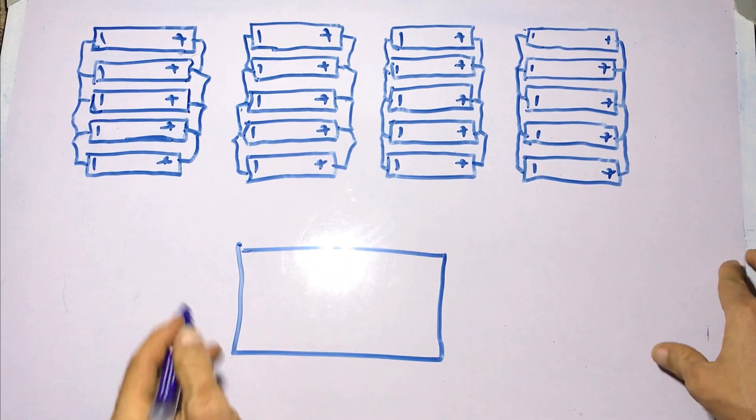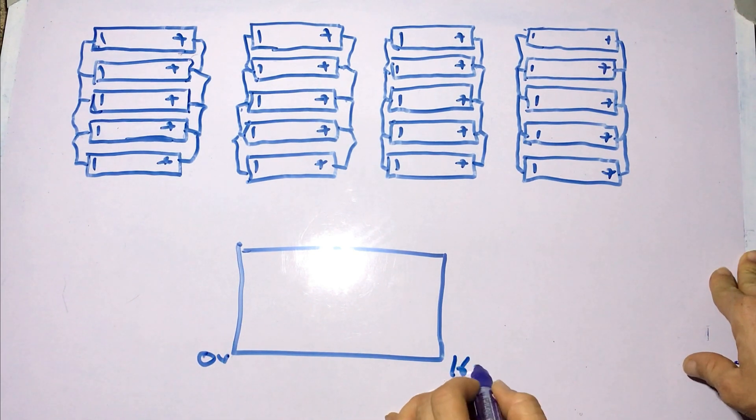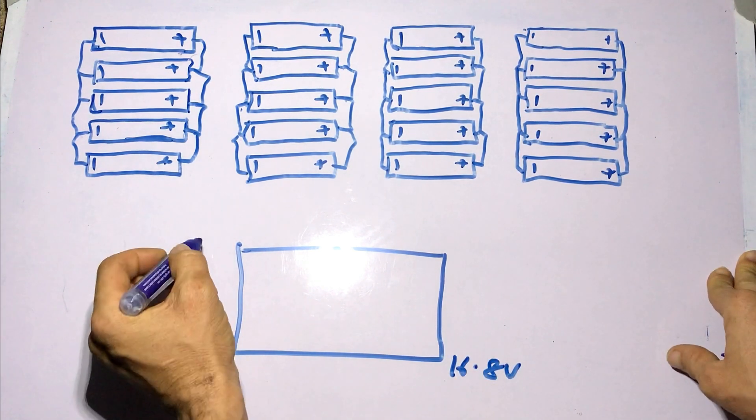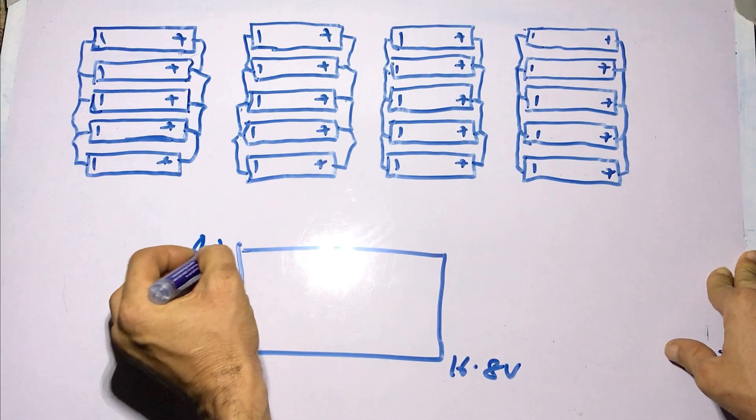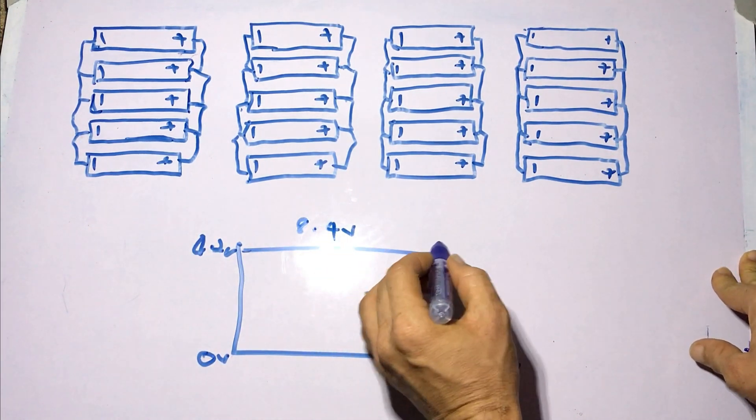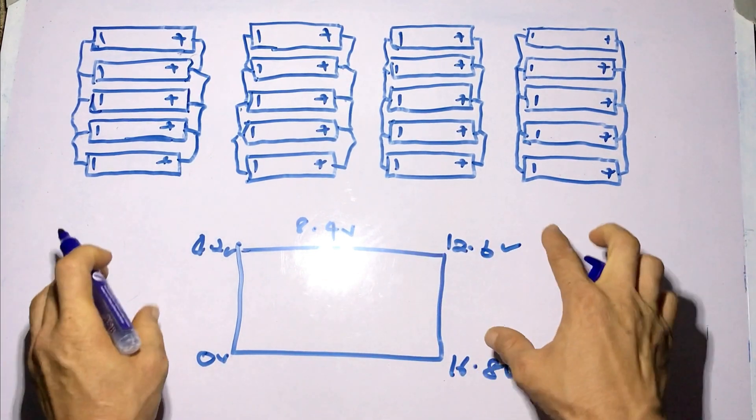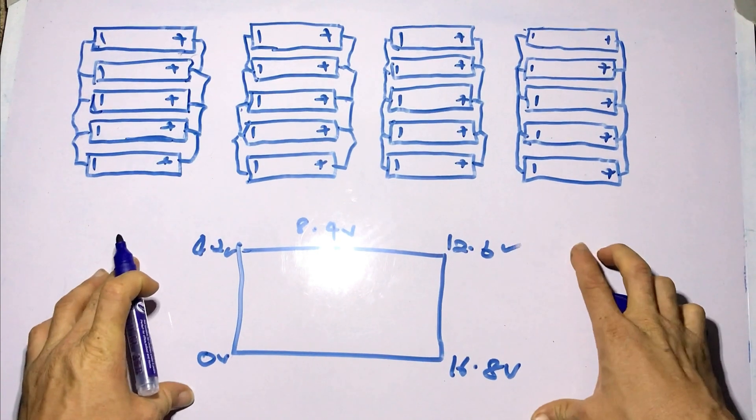So you have five connections on the BMS, one labeled zero volt, and you have 16.8 volts, and you have 4.2 volts, 8.4 volts, and then 12.6 volts. So these are the five connections you have on a BMS.